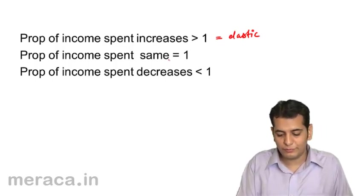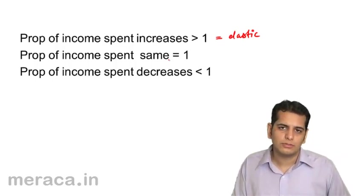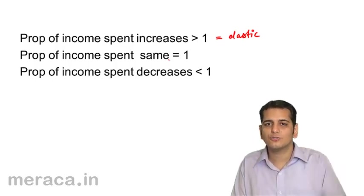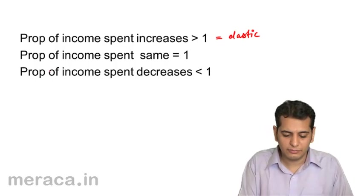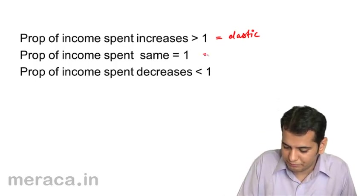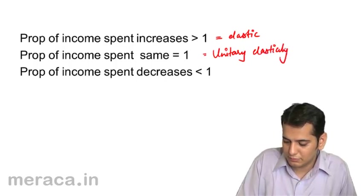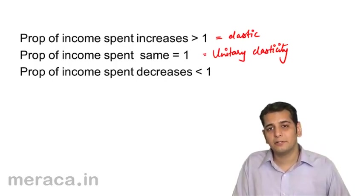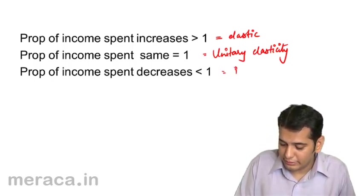Second, when the proportion of income spent remains the same — change in demand is equivalent to change in income — the income spent stays the same before and after, and we call this unitary elasticity. Finally, when the proportion of income spent decreases — elasticity becomes less than one — we say that demand is inelastic.